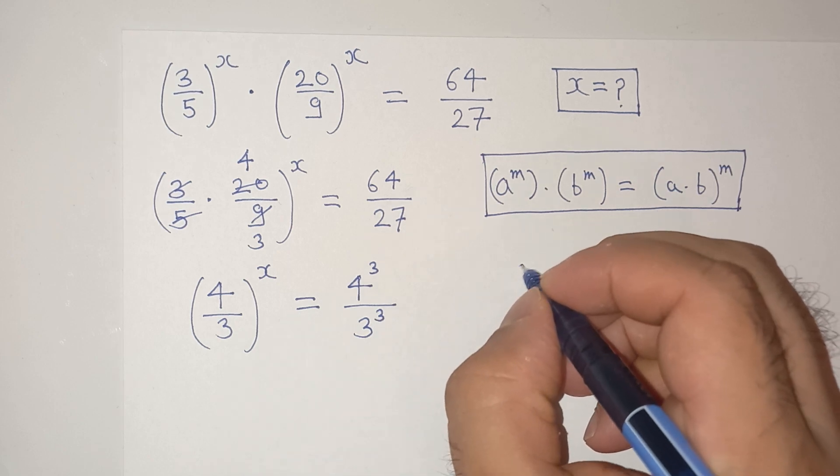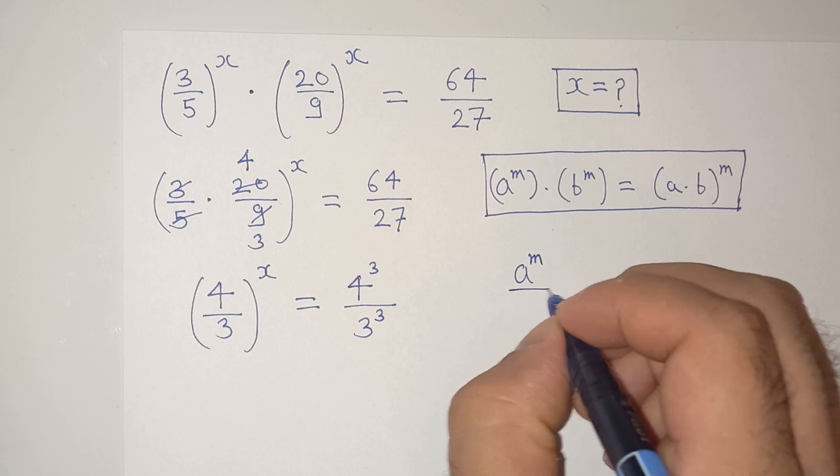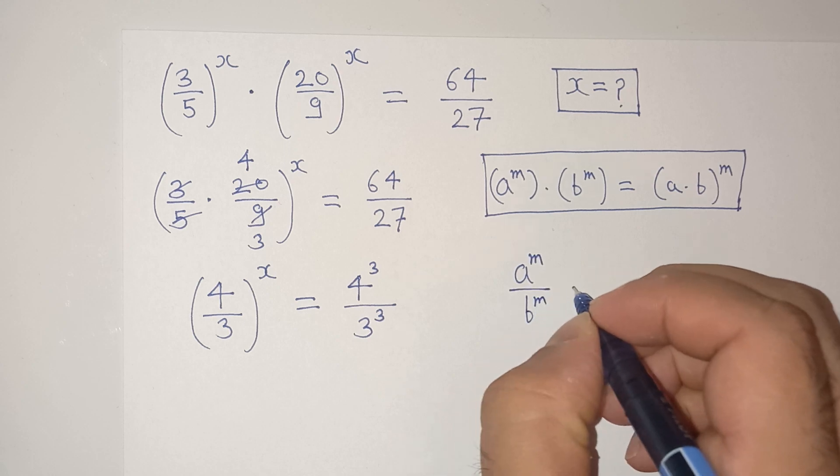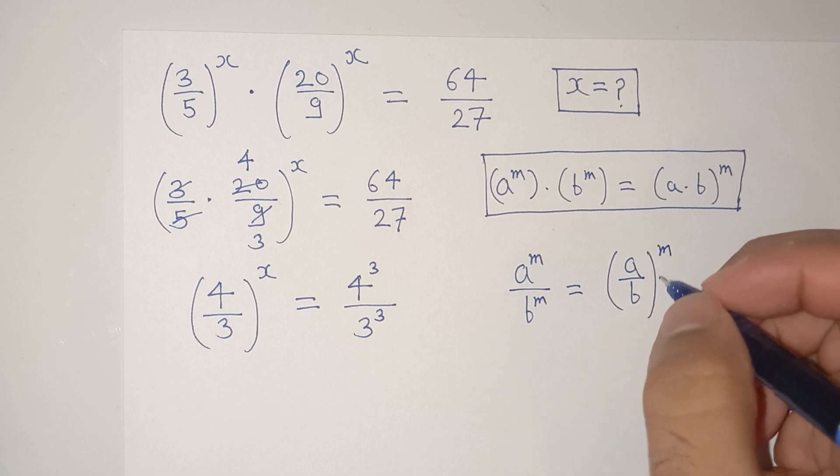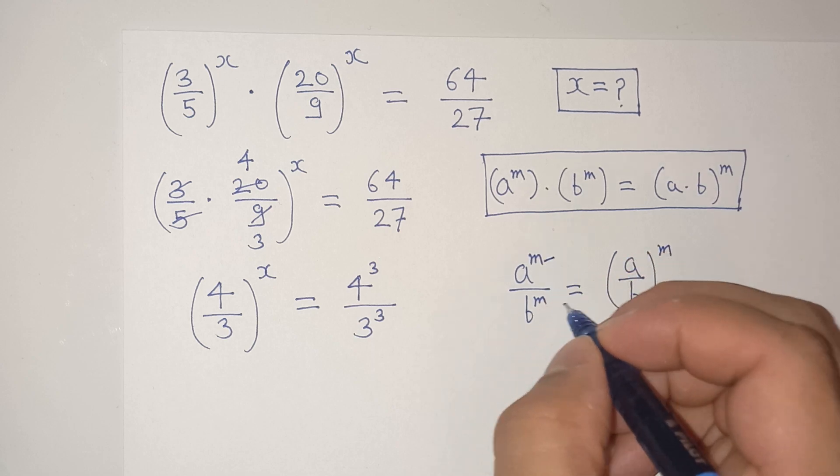Now, we will apply this exponential rule which is a power m divided by b power m equals to a by b power m when the exponent m is common.